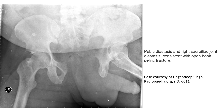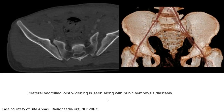This is an example of it. For pelvic diastasis, CT findings consistent with open-book pelvic injury show bilateral sacroiliac joint widening, seen along with pubic symphysis diastasis. So this is a case of open-book pelvic injury.